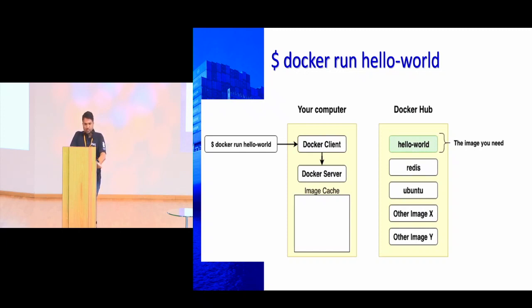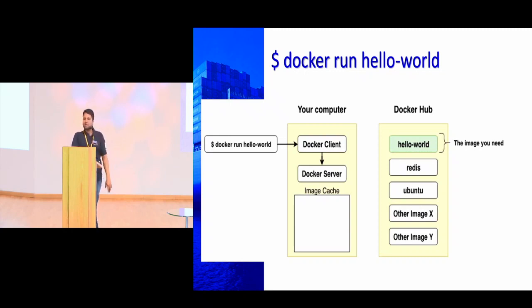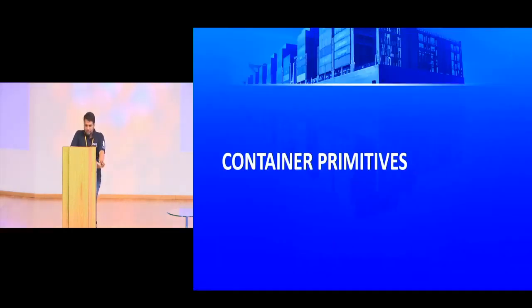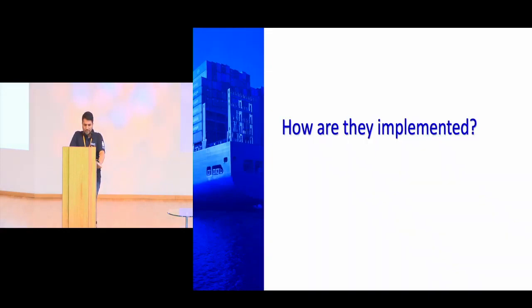You might wonder how these things work. How many of you have tried opening the Linux kernel code at kernel.org and searched for containers or LXC? If you try to grep for containers, you won't find anything relevant to Docker — because the container itself is not a capability of the kernel. The kernel capabilities used to run containers are cgroups and namespaces. In this next section we'll discuss what cgroups and namespaces are.